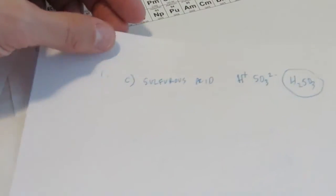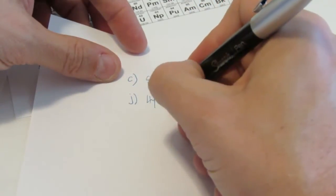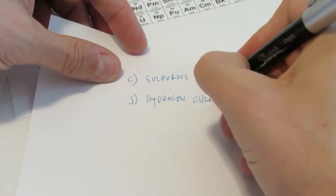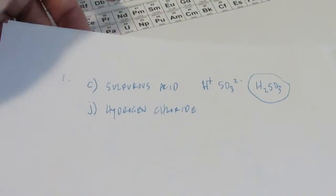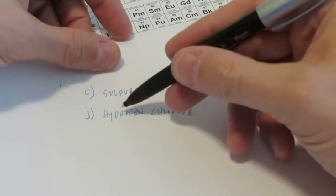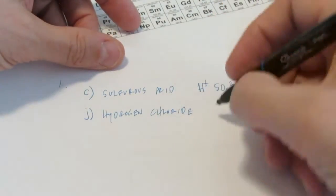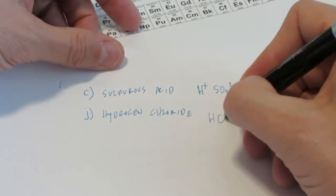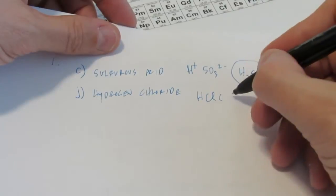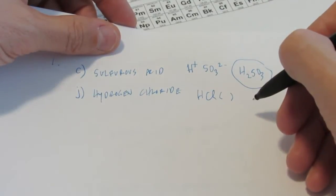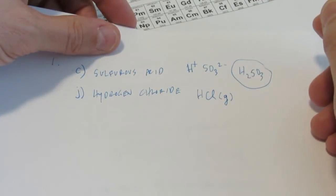What about letter J — number 1 J wants the formula for hydrogen chloride. That's not an acid; it would say acid after it if it was. So hydrogen chloride means non-metal to non-metal — we use our covalent rules. There's one hydrogen and one chlorine, so it's just HCl. Now, that could be confused with an acid, so we put G in parentheses after it — HCl(g) — so people reading it do not recognize it as a binary acid.